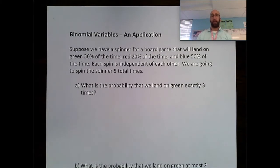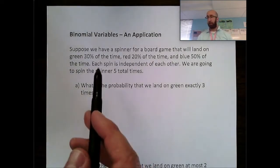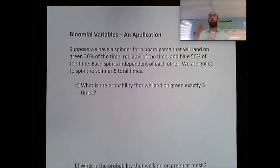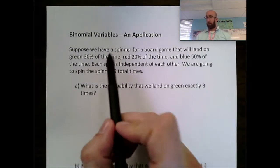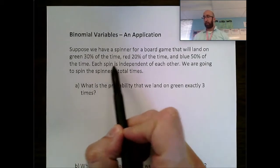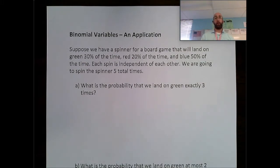We need a constant probability of success. The probability of getting green is 30% every single time. The last thing we need is independence from one trial to the next. The problem states each spin is independent of each other, so we have the makings of a binomial situation.